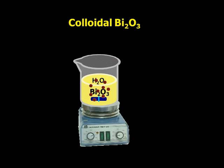A typical preparation of colloidal bismuth oxide nanoparticles is the following. First, bismuth nitrate pentahydrate is dissolved in water. Then, an aqueous solution of potassium hydroxide is added. This solution is heated under vigorous magnetic stirring. It is worth noting that during the entire process of mixing, a weak stream of argon is blowing over the reaction mixture.